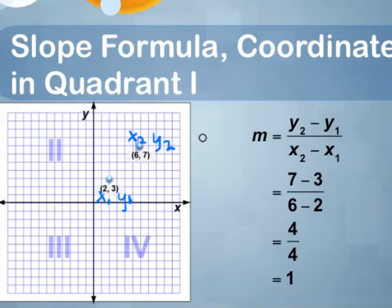Take those coordinates and plug them into the slope formula. y2 goes here, y1 goes here, x2 goes here, and x1 goes here.